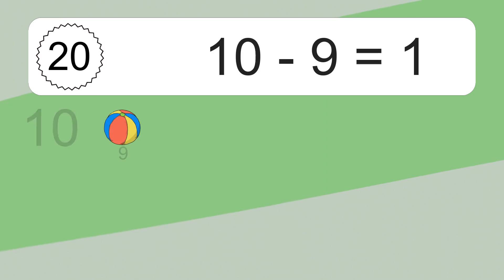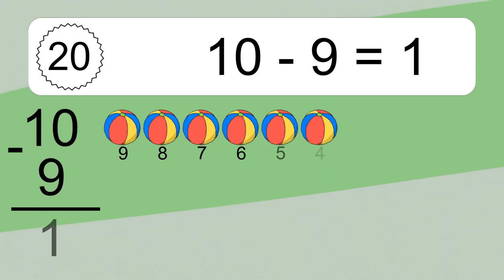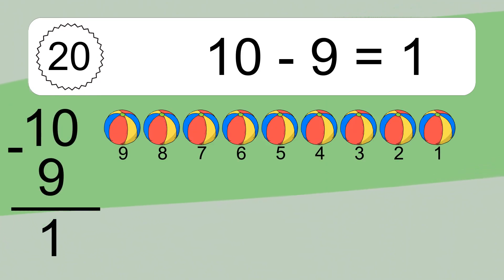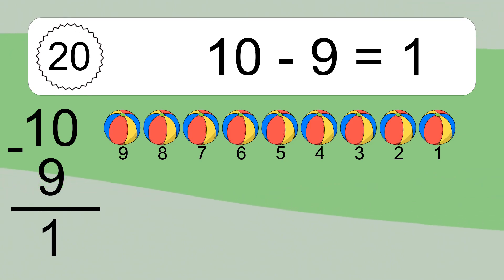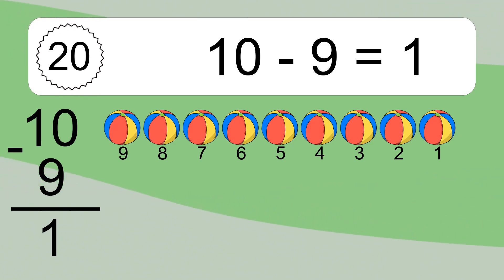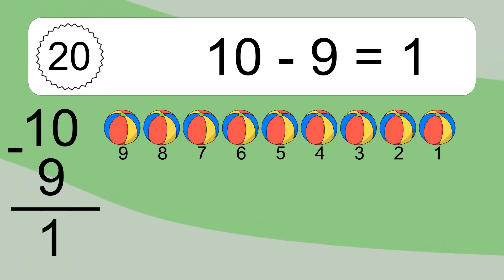10 minus 9 equals what? 10 minus 9 equals 1. Let's count it: 9, 8, 7, 6, 5, 4, 3, 2, 1.